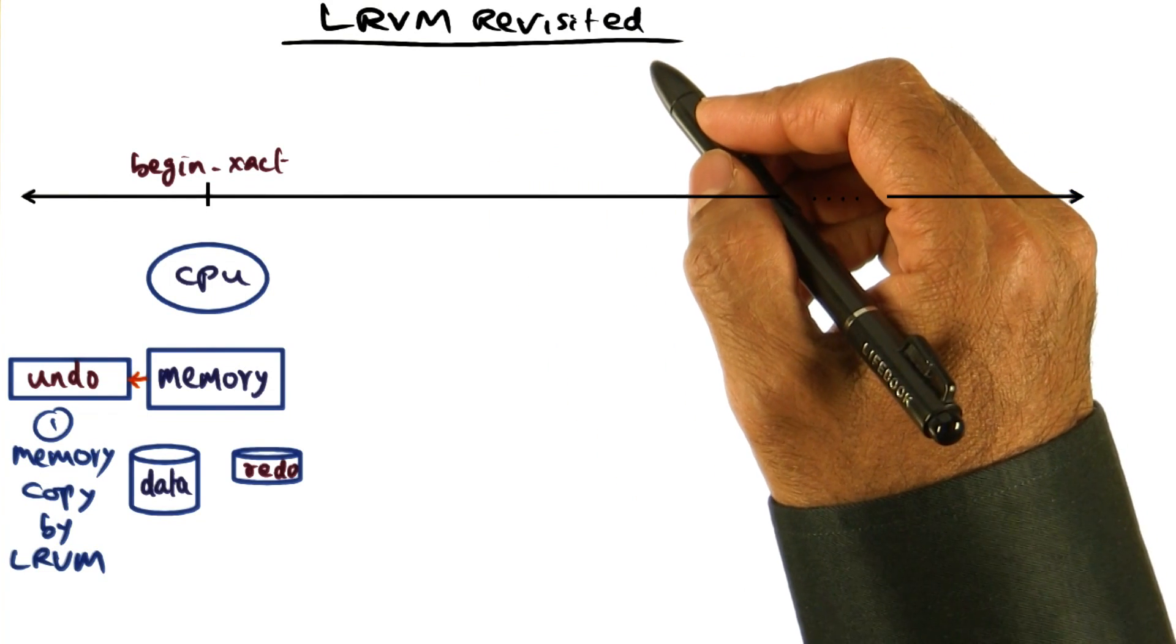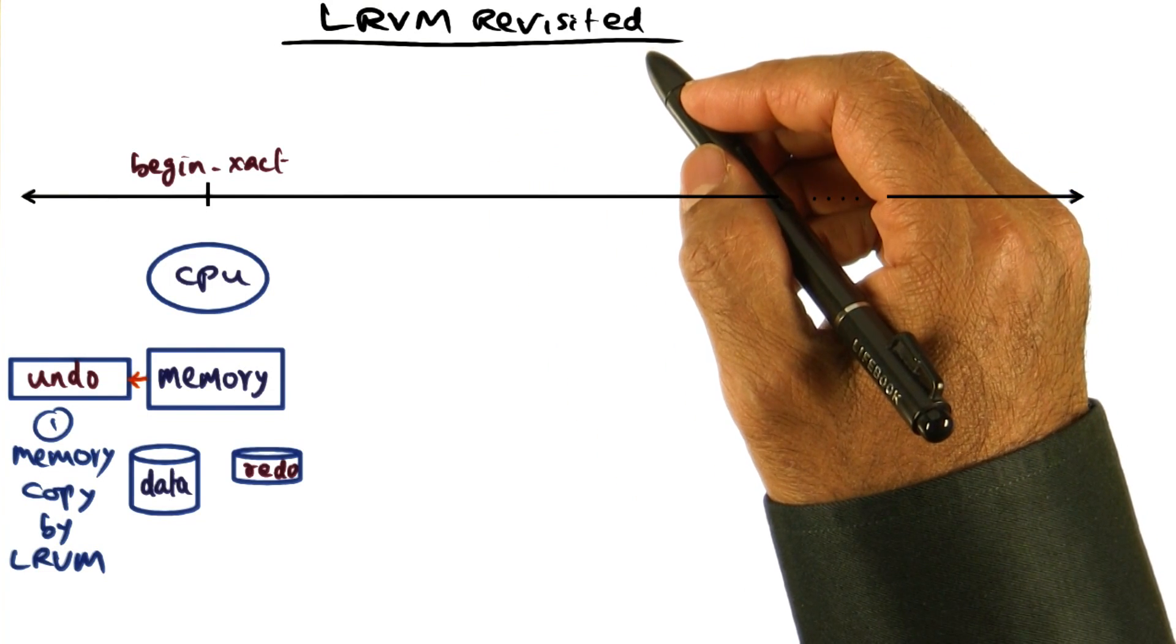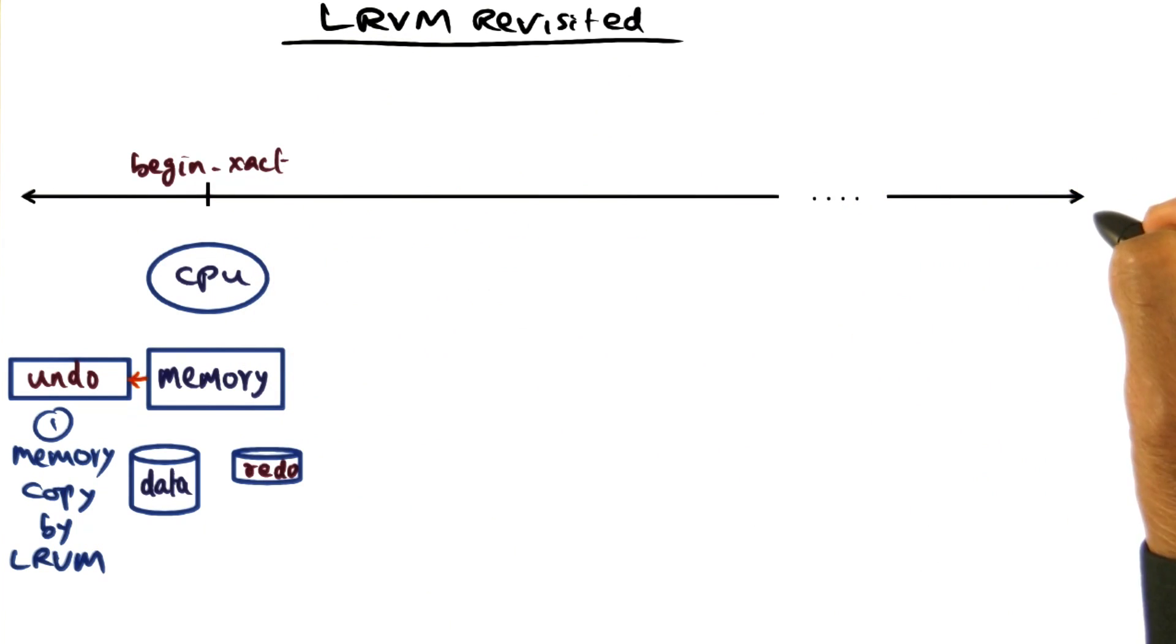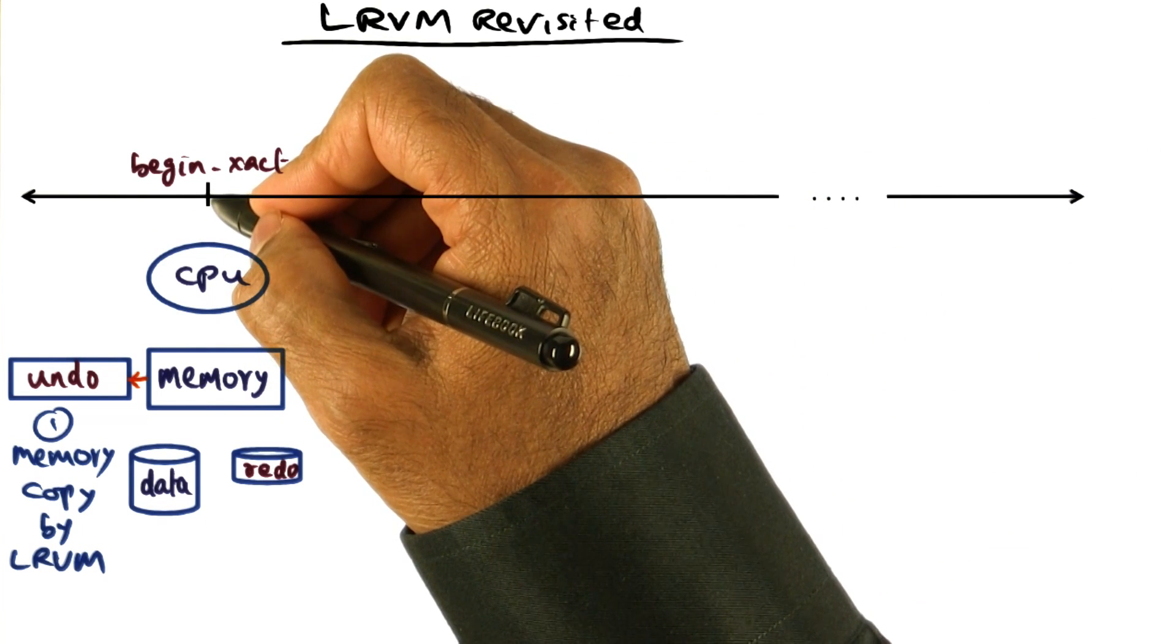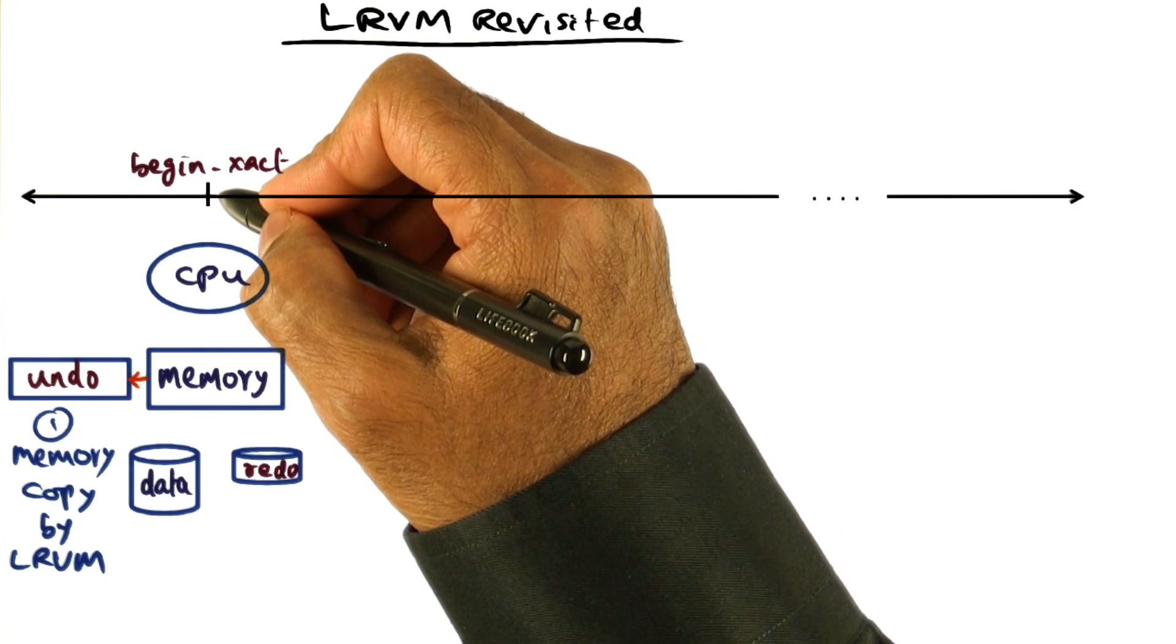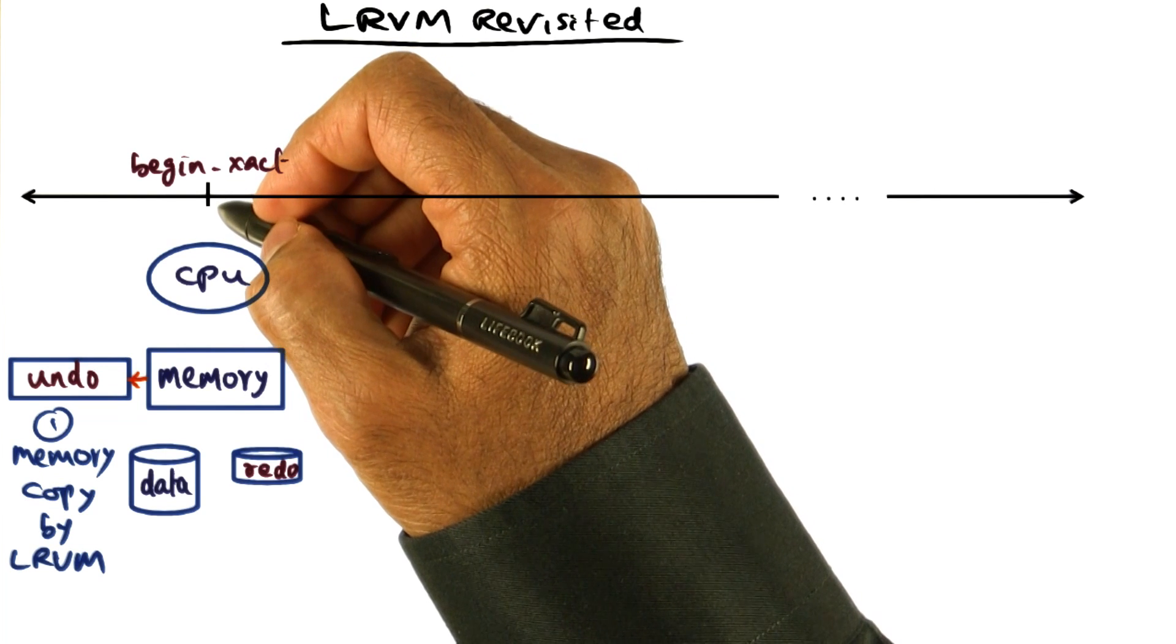Let's revisit the semantics of LRVM and what it does. So this is a time axis. The application, when it calls the begin transaction primitive of LRVM,